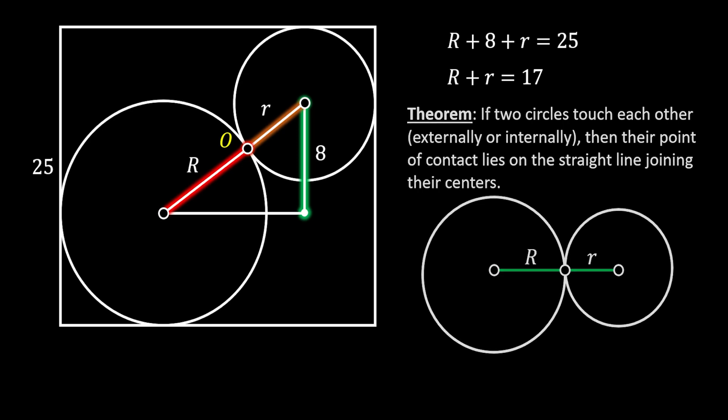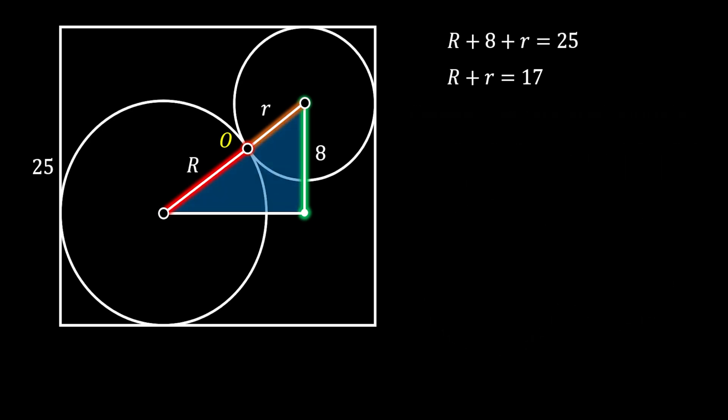Alright, so now we can notice this really nice blue right triangle, whose base we can label as a. Then, we can use the Pythagorean theorem on this triangle. We can say that the leg 8 squared is equal to the hypotenuse squared, which represents the sum of both radii of our circles minus the leg a squared.